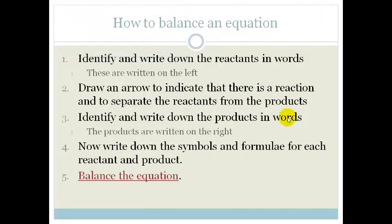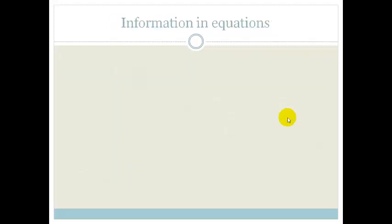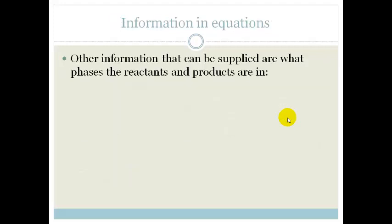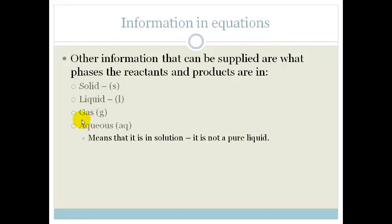Right, grade 10. So you can see that even though some of them are very tricky and can take a while, it can actually be done in baby steps. So also what you need to know is that on equations you get some other information. So what you could get is a little prefix. And if the prefix is an S, then it is a solid. If the prefix is an L, then it's a liquid. If the prefix is a G, then it's a gas. And if it's aqueous, it means aqueous, and what that means is that it's in solution, it is not a pure liquid.